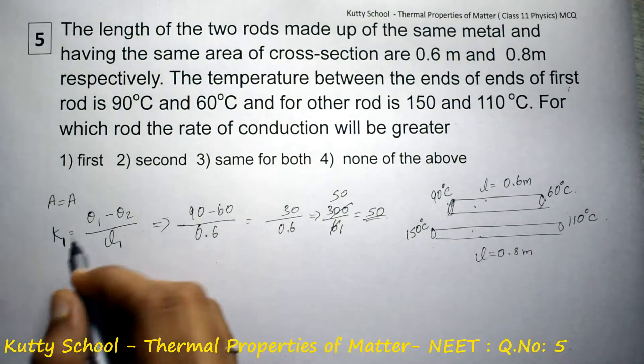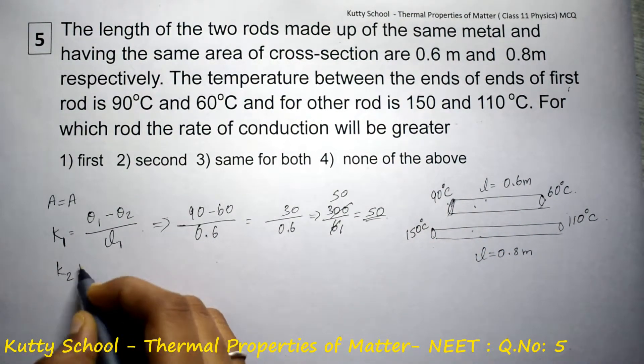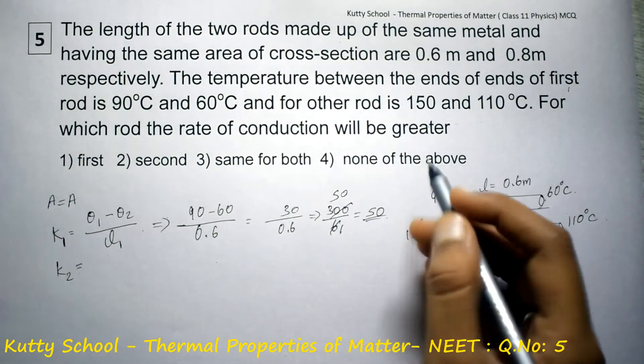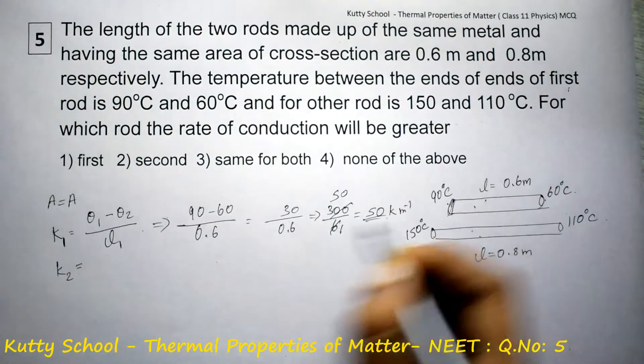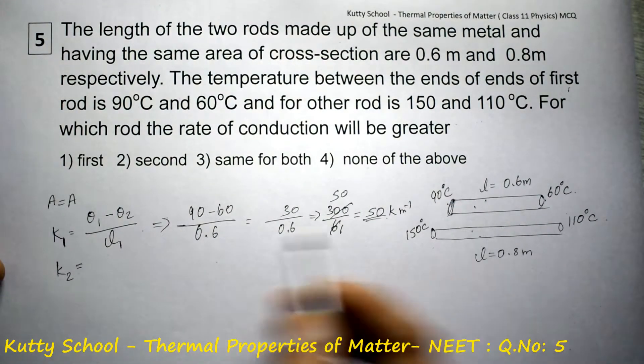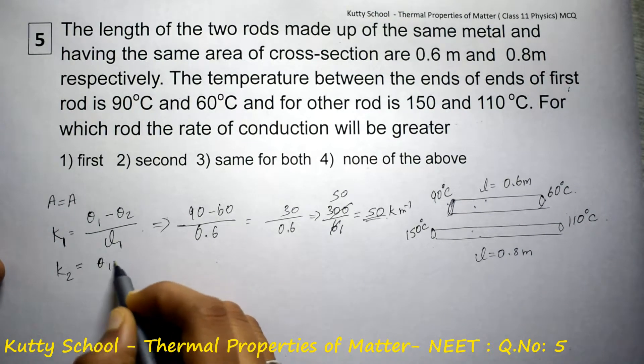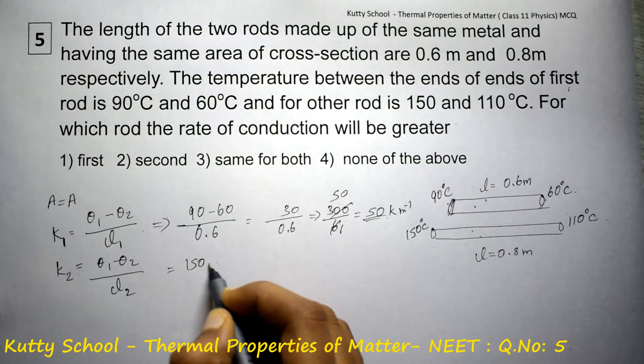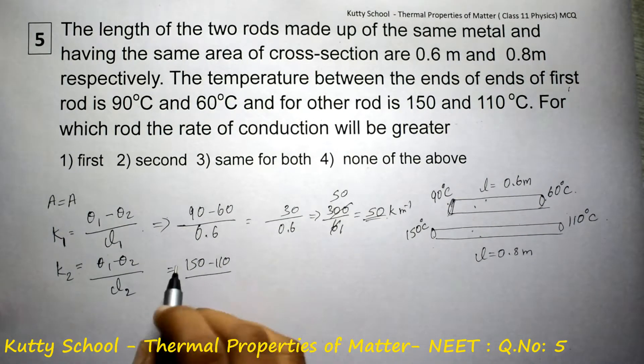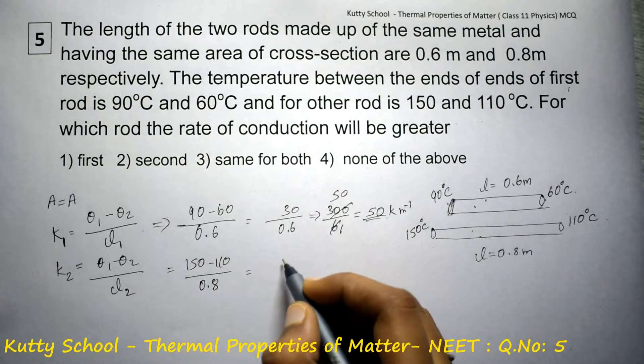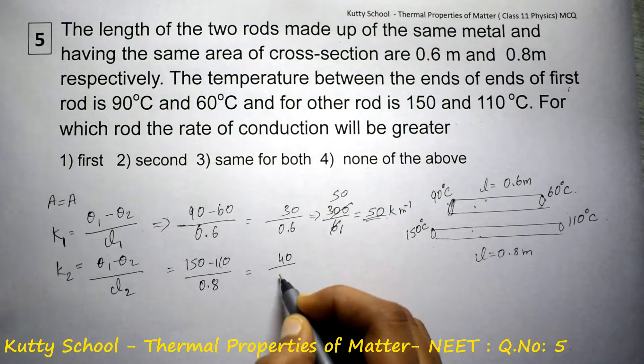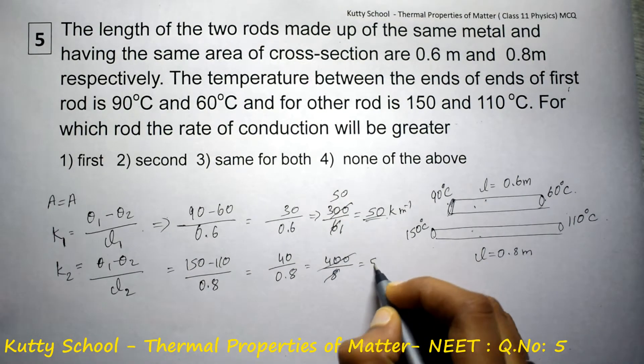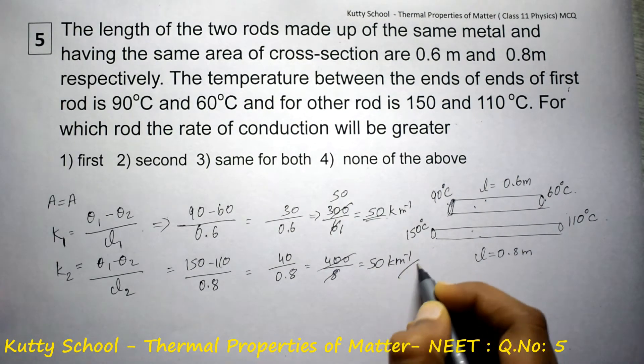And for the second rod, k2 equals theta 1 minus theta 2 by L2, which is 150 minus 110 by 0.8, equals 40 by 0.8, equals 400 by 8, and equals 50 Kelvin meter inverse.